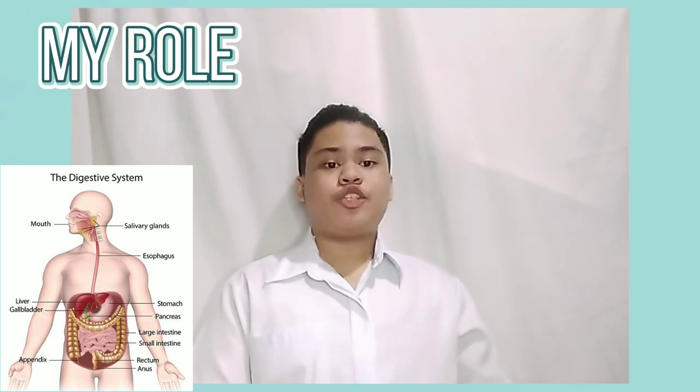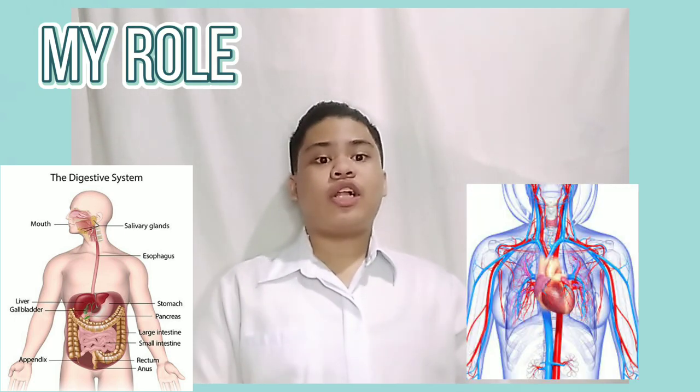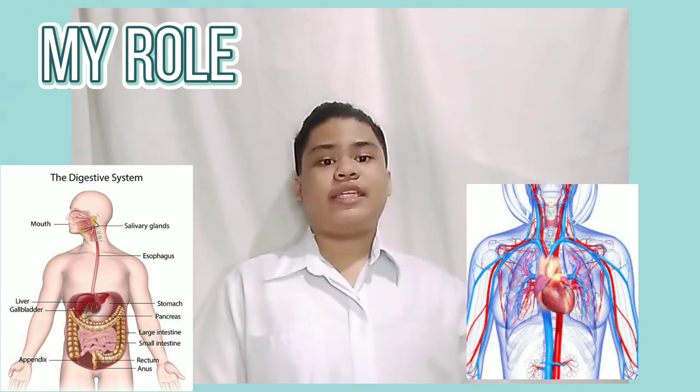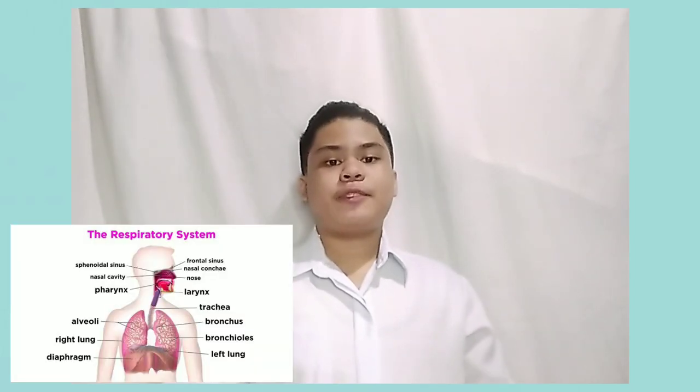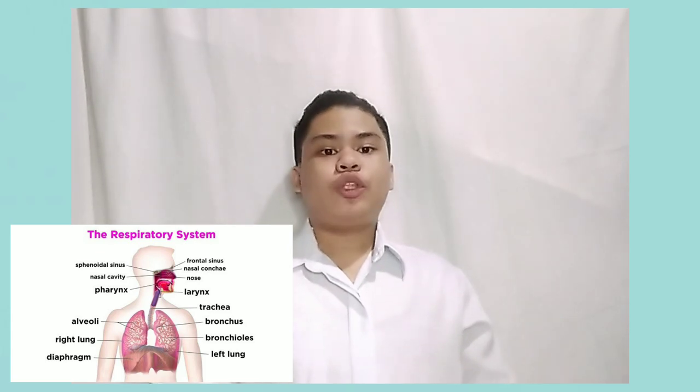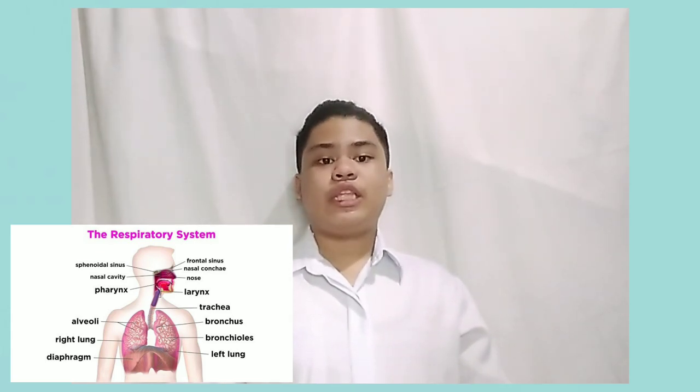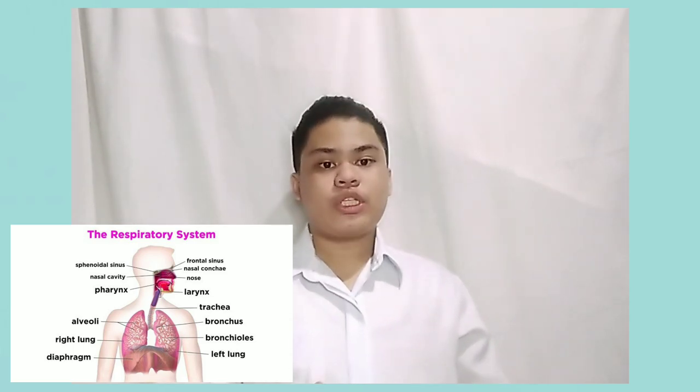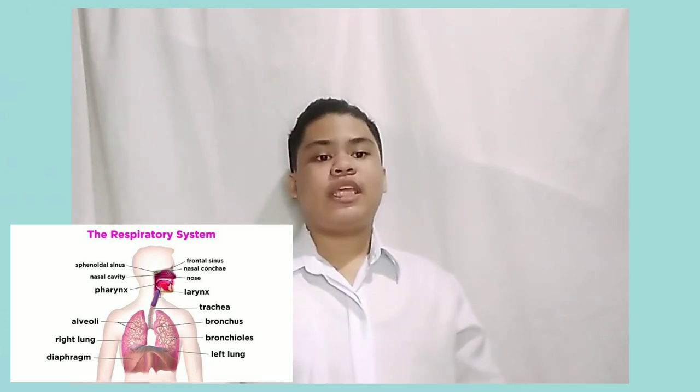The digestive system's biggest role is to process the food we eat and pass nutrients through the circulatory system via the blood to various parts of the body for nourishment. The respiratory system's main function is to process oxygen and remove carbon dioxide from our body, as cells need oxygen to release the energy stored in molecules such as glucose. The excretory system's main role is to remove the waste products of our body. This is how these body systems interact with each other.